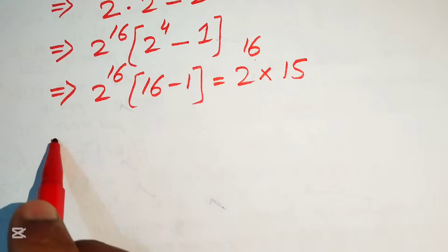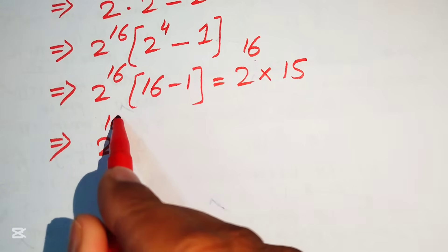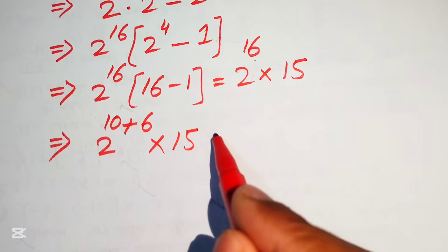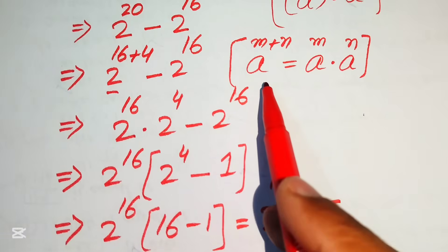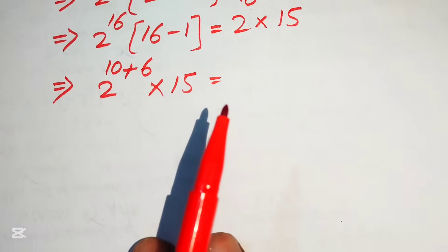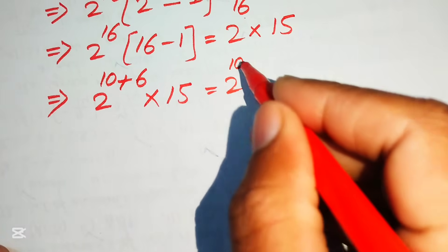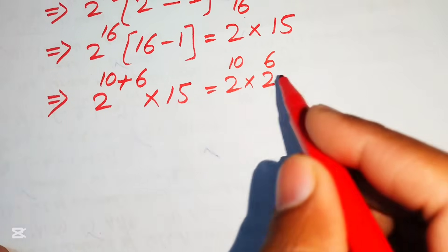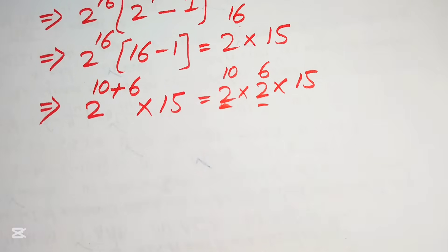We again focus on the exponent. We write 2^16 as 2 to the power of 10+6, then apply the exponential law to break it as 2 to the power of 10 multiplied by 2 to the power of 6, and the whole thing is still multiplied by 15.